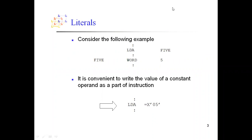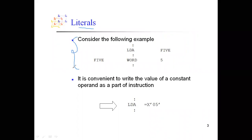The necessity of literals is illustrated through this assembly code. For example, you have an instruction LDA with phi as its operand. Since phi is an operand, its reference will be somewhere else as a label, and then WORD is the constant with value phi. Instead of having such an instruction — giving an operand as a label elsewhere and then assigning the constant value — we can use literals, which let you write the value of a constant operand as part of the instruction itself.